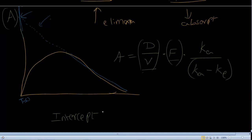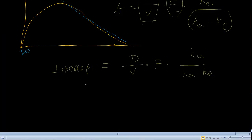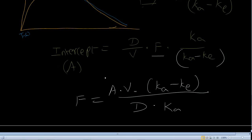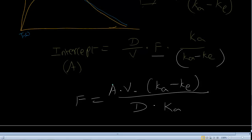The intercept is equal to dose divided by volume times F times ka over (ka minus ke). Rearranging this equation, F is equal to the intercept A times V times (ka minus ke), divided by dose times ka. So if you have the intercept, VD, ka, ke, and the dose, you can easily calculate F — the fraction that is bioavailable.